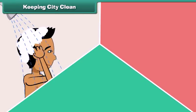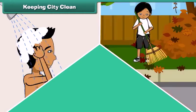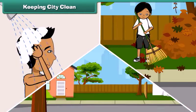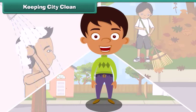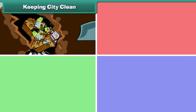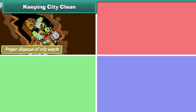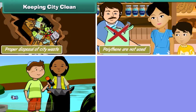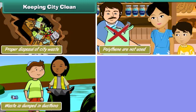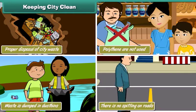It is not enough to maintain personal, neighborhood, and community hygiene — it is also our responsibility to keep our city clean. We can do this by ensuring proper disposal of city waste, avoiding non-biodegradable substances like polythene, dumping waste in dustbins, and not spitting on roads.